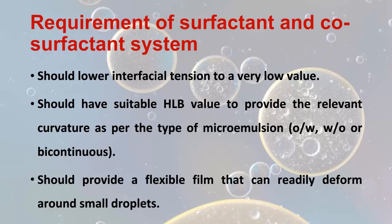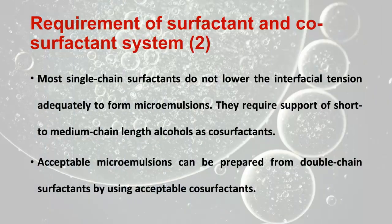3. They should provide a flexible film that can readily deform around small droplets. Most single-chain surfactants do not lower the interfacial tension adequately to form microemulsions; they require support of short to medium chain length alcohols as co-surfactants. Acceptable microemulsions can be prepared from double-chain surfactants by using acceptable co-surfactants.